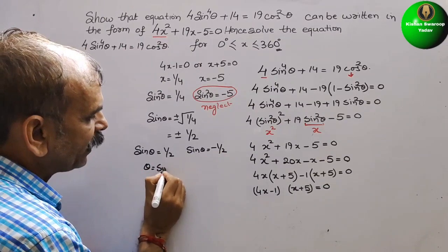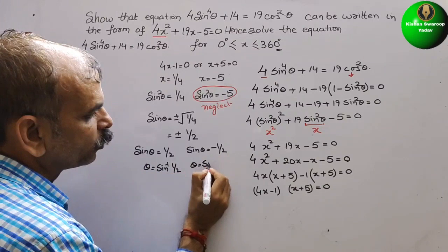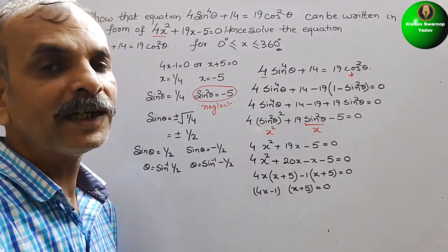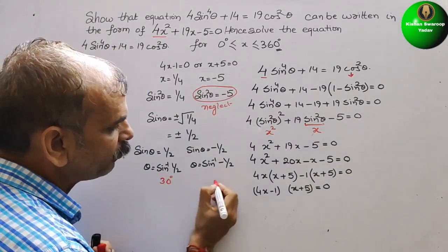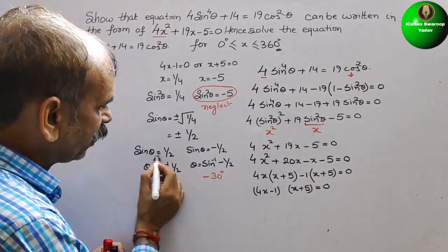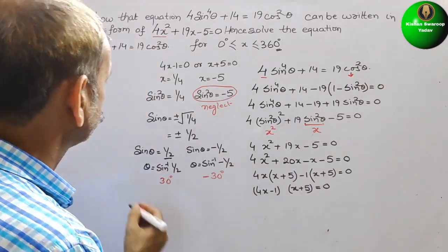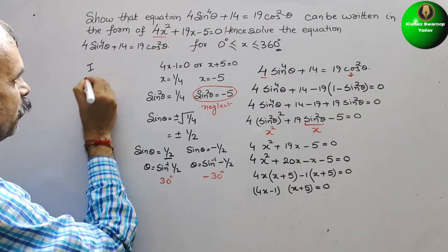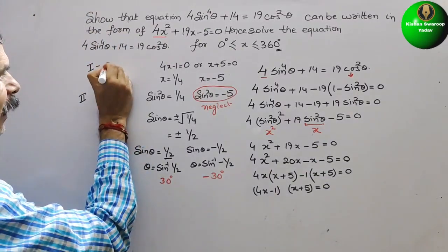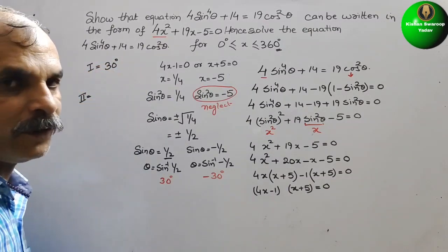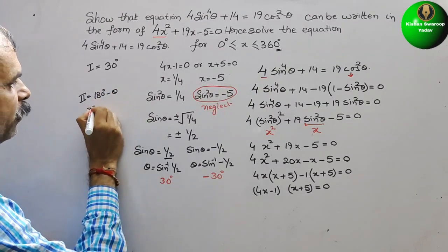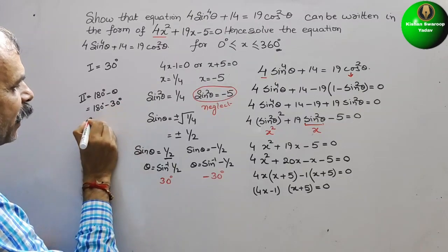For sinθ = 1/2: we know sin30° = 1/2. Sin is positive in the first and second quadrants. In the first quadrant: 0° + 30° = 30°. In the second quadrant: 180° − 30° = 150°.